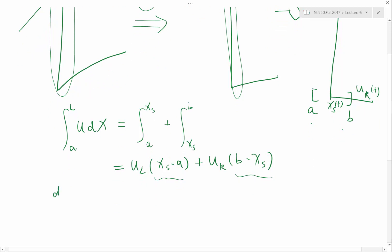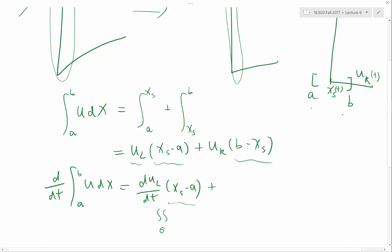So now when we take the derivative d dt of this volume integral, it can be written into several parts. One part is due to the movement of ul, so d ul dt times x s minus a. Remember, x s minus a is tiny, tiny, tiny, because we zoomed in. So this term is almost approximately equal to zero. The second term that is also almost approximately equal to zero is this. This is because B minus x s is also very, very small. The only term that is not going to be zero is because of the movement of x s. A is constant, B is constant, so they don't introduce any time derivatives. So because of x s, we have dx s dt times, positive here, ul, negative here, minus ur.